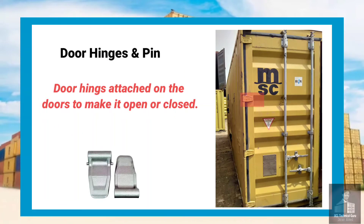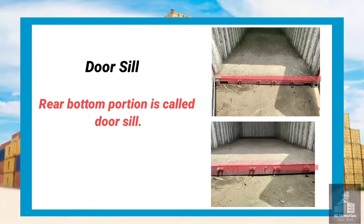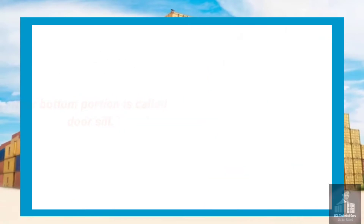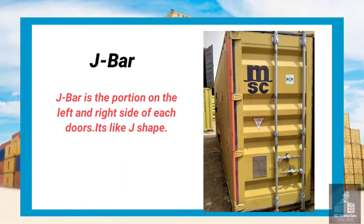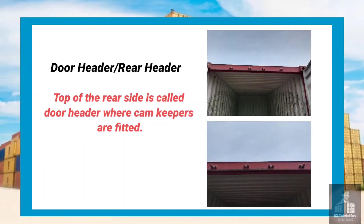Hinges and pin: door hinges are attached on the doors to make them open or close. Door sill: the rear bottom portion is called the door sill. J-bar: the J-bar is the portion on the left and right side of each door — it is J-shaped. Door header or rear header: the top of the rear side is called the door header, where cam keepers are fitted.